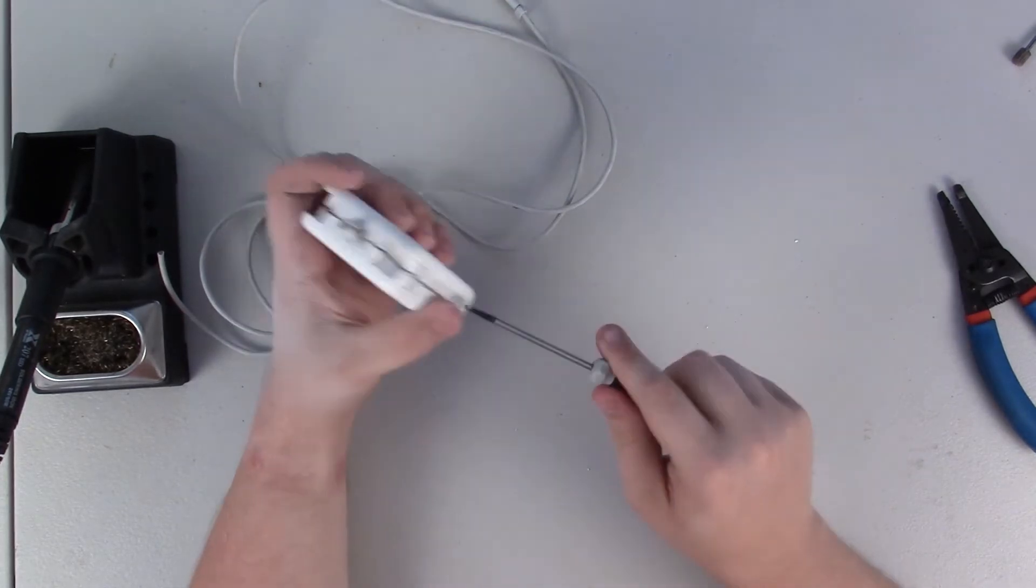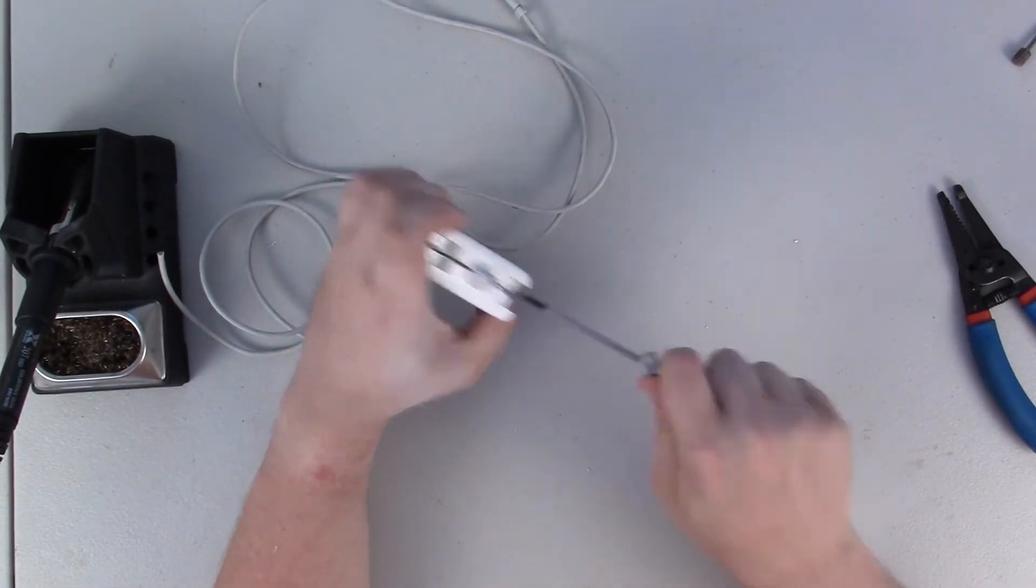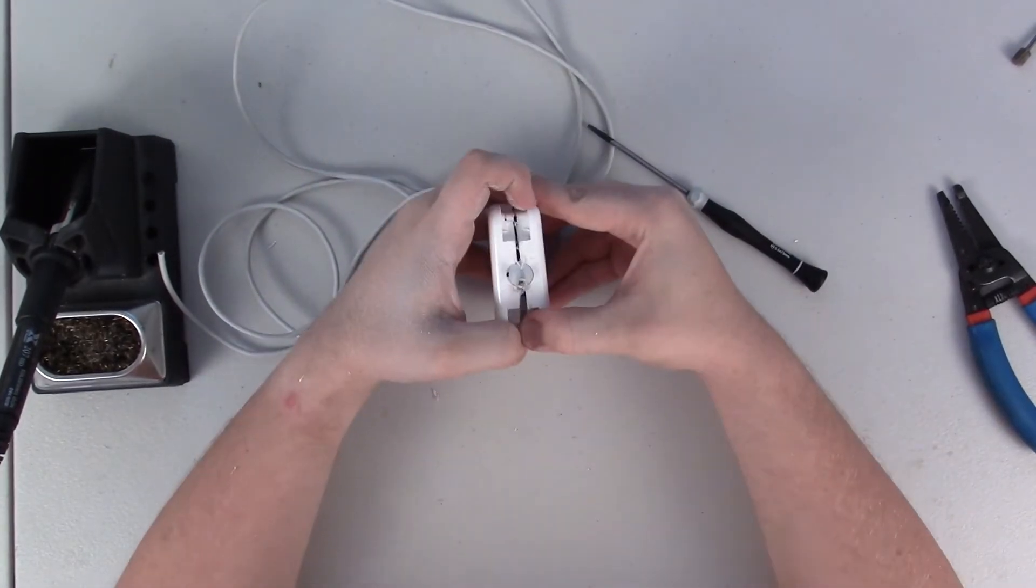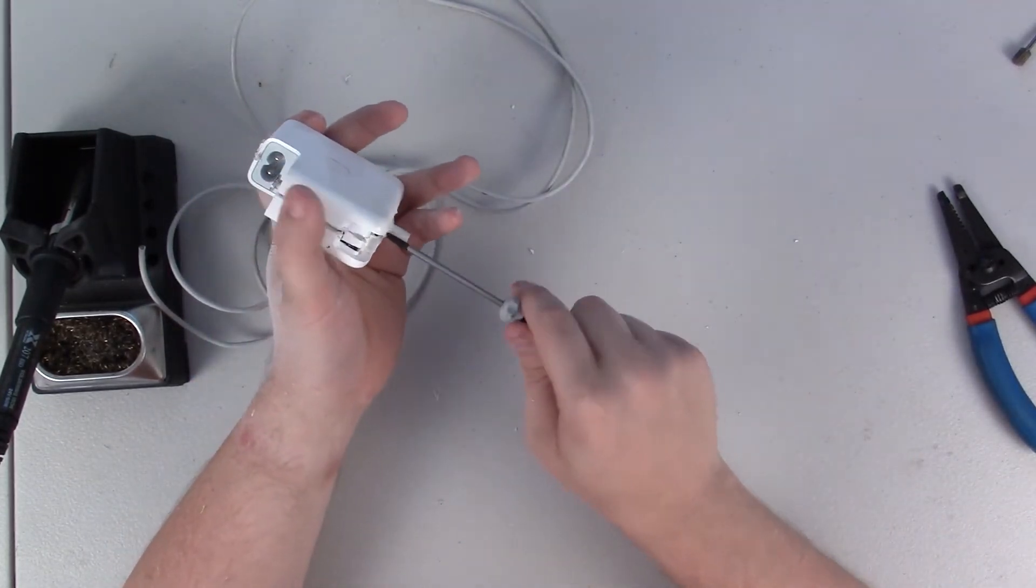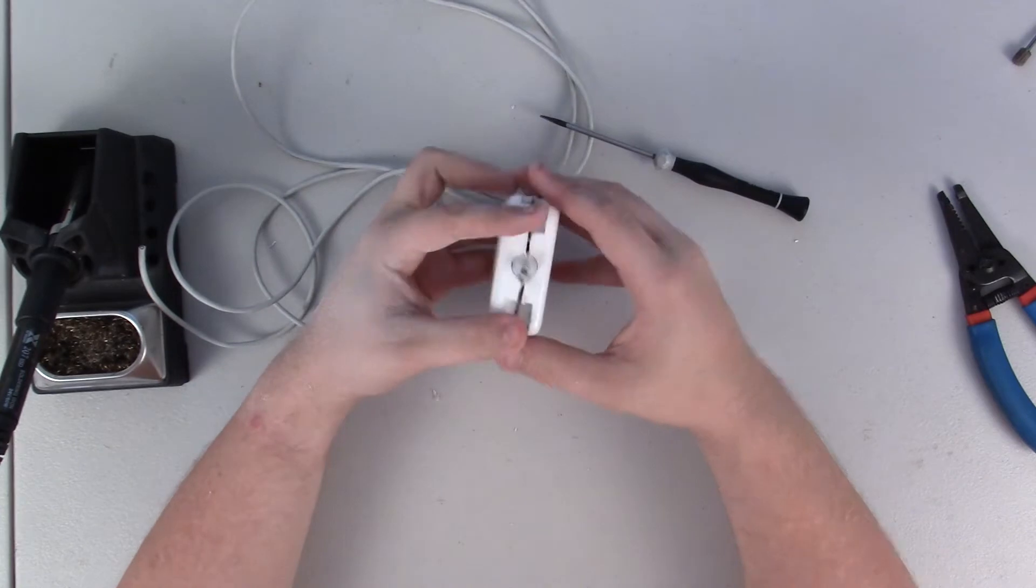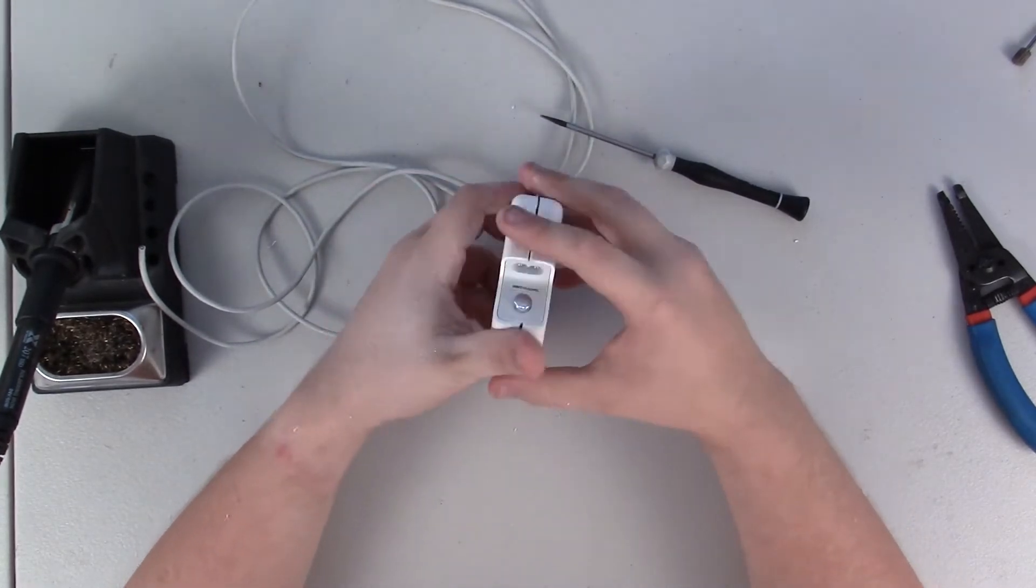Usually you can see here I'm having quite a bit of trouble. They usually have some adhesive as well holding the electronic guts to the inside of the charger.